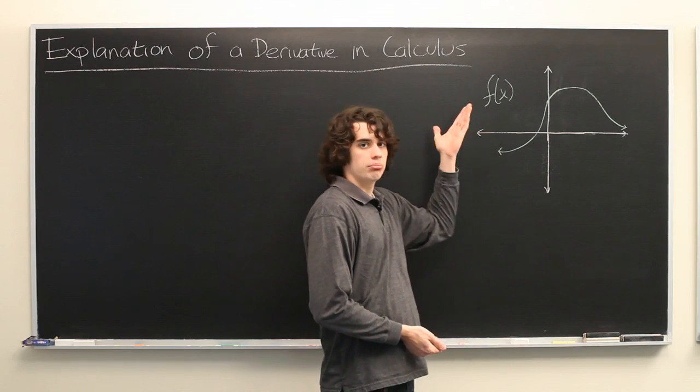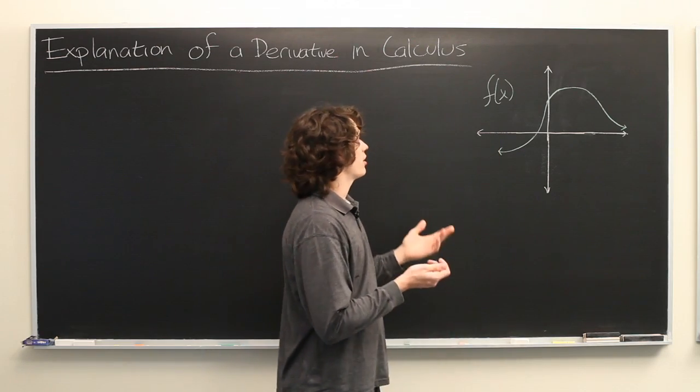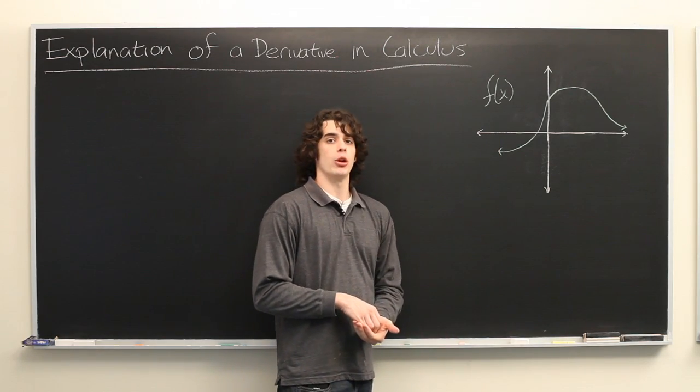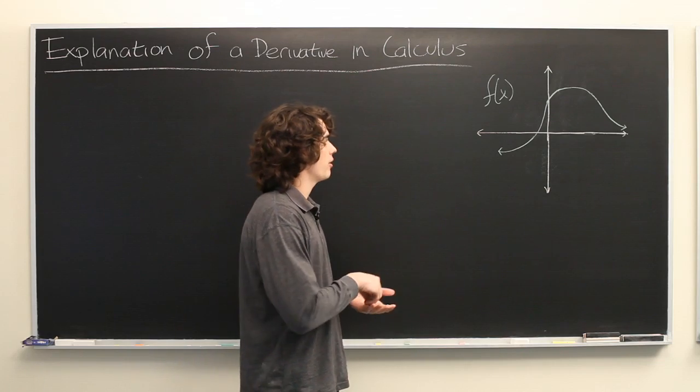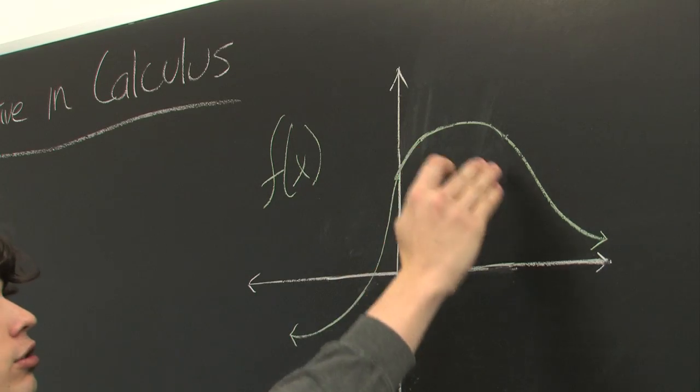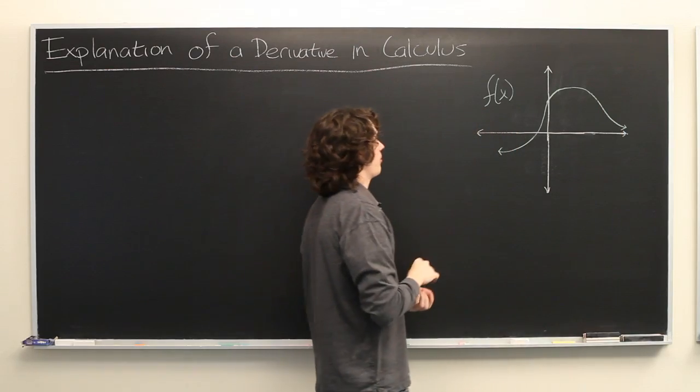So here we have some function f of x. f of x might be a polynomial, it might be a trigonometric function, it could be anything. And here in green, I've sketched the graph of some function.